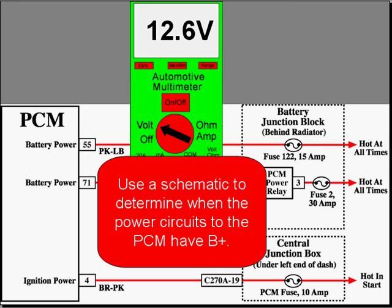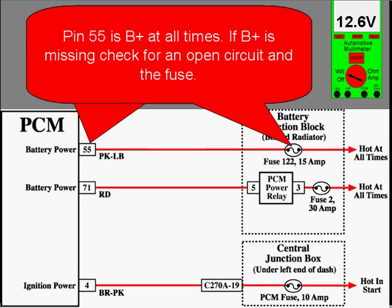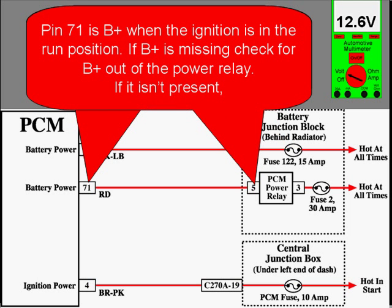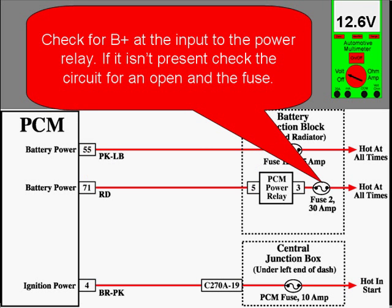Use a schematic to determine when the power circuits are supposed to have B+. For example, pin 55 is B+ all the time — if B+ is missing, check for an open circuit or replace the fuse. Pin 71 is B+ when the ignition is in the run position. If B+ is missing here, check for B+ out of the power relay. If it isn't present, check for B+ at the input to the power relay; if it still isn't present, check the circuit or replace the fuse.